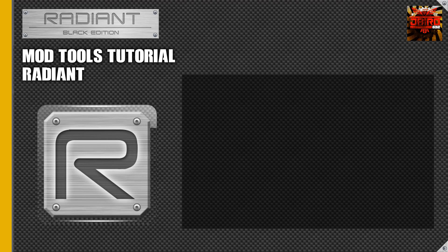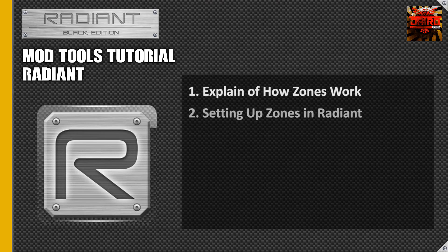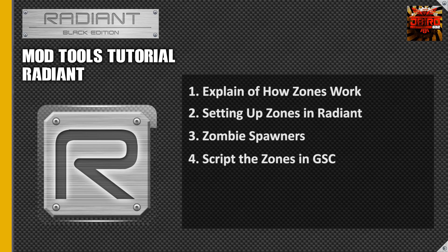Hey guys, Jaybird here, and we're going to be starting another tutorial. This one's going to be continuing off of our Doors tutorial, and it's going to be for zones and zombie spawners. I'll go over what zones are and what they're used for, then jump into Radiant to set up our zones and link them to our doors, set up our zombies, and finally do the coding side of things for the zones in our map's GSC server script. Let's jump in.